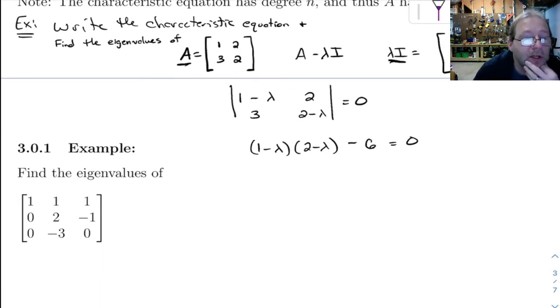Of course, we've got to FOIL this thing out. So we get, FOILing this is going to give us 2 minus lambda minus 2 lambda plus lambda squared minus 6 equals 0. So we can rewrite that as lambda squared minus 3 lambda minus 4 equals 0.